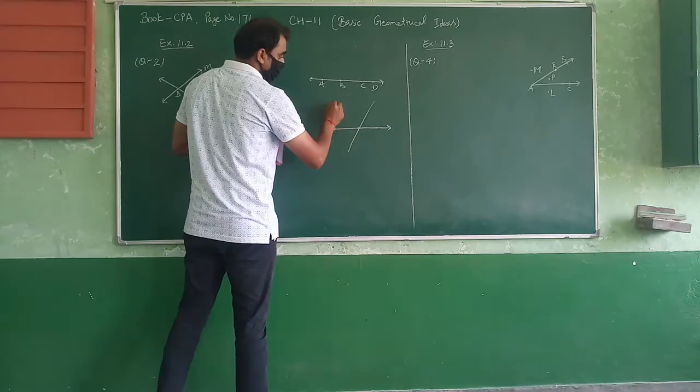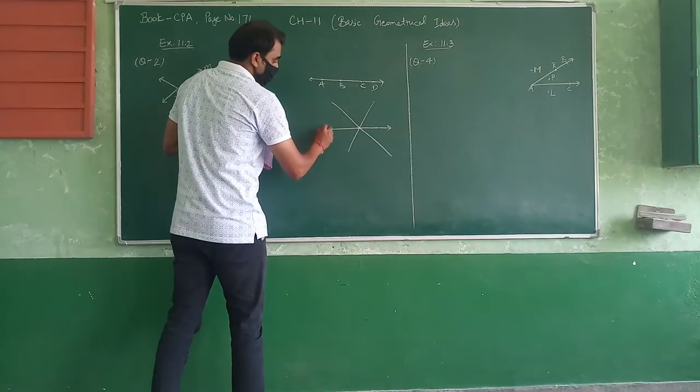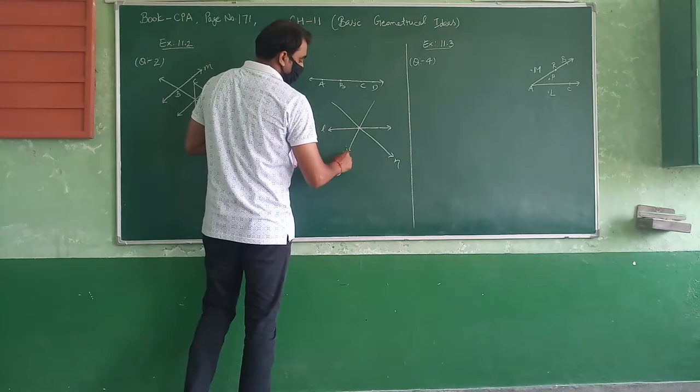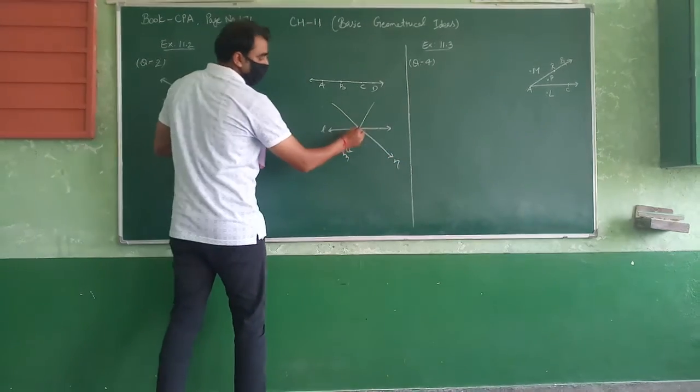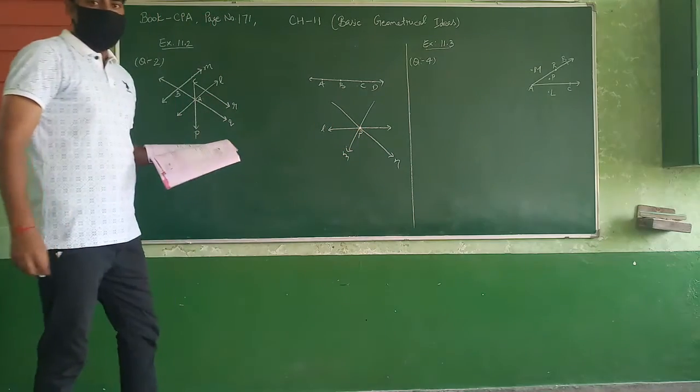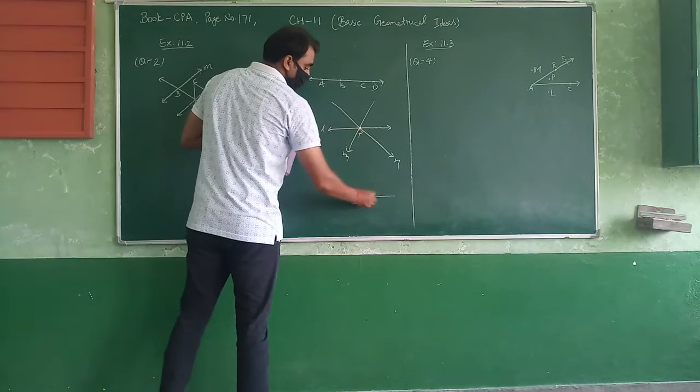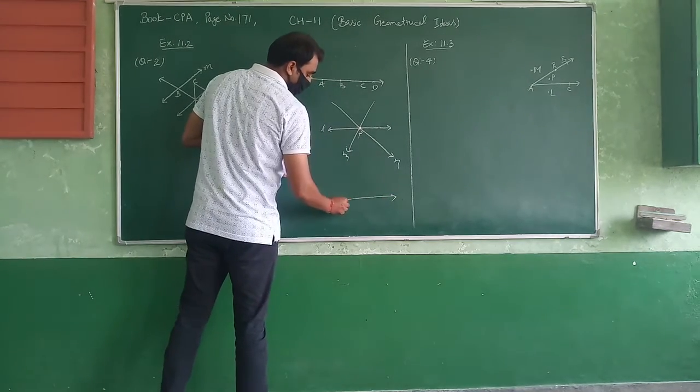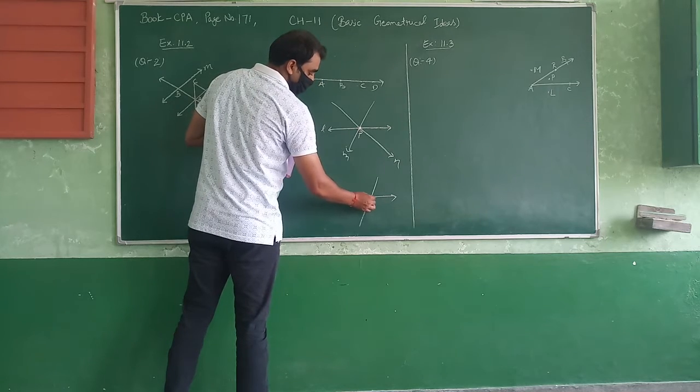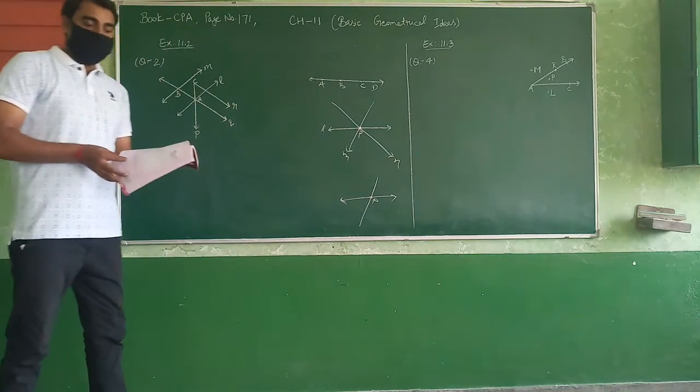What are concurrent points? Suppose 3 or more lines pass through the same point - first line, second line, and third line pass through the same point - then it belongs to concurrent points. What are intersecting lines? Suppose this is one first line and another point; first and second, here is the intersecting point. Understood?